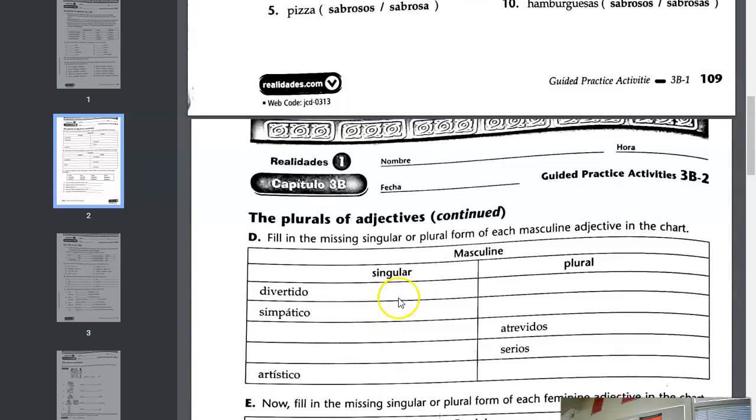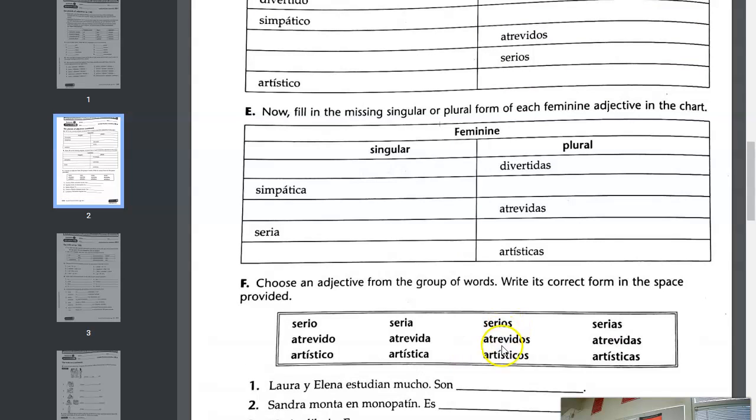To make simpatico plural, add an S. To make these adjectives singular, remove an S. Very intuitive and straightforward. You're going to do the same here for part E and F.